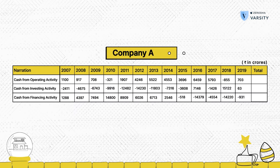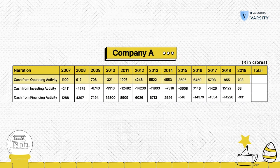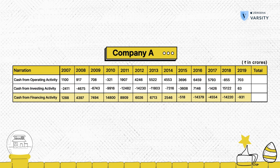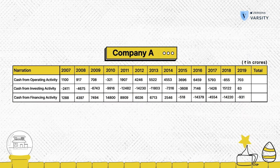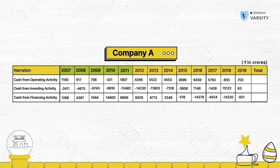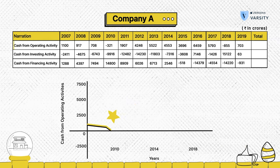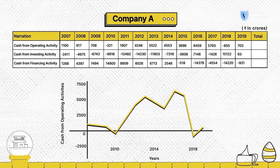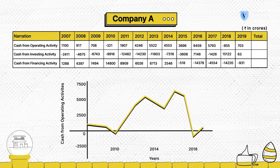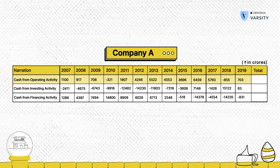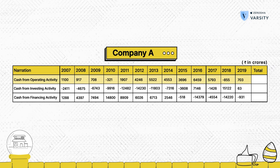Let's take a quick example to understand this better. Here I've got the cash flow statement of a particular company — cash flow from operating activity, investing activity, and financing activity. The data runs from 2007, so that's roughly about 13 to 14 years of data. The moment you see a volatile set of numbers from cash flow from operating activity, that should raise a red flag. Ideally, the company you are investing in should have stable numbers from operating activity.